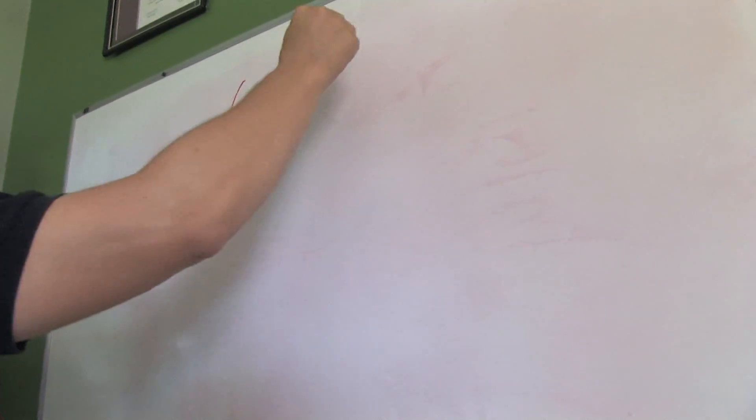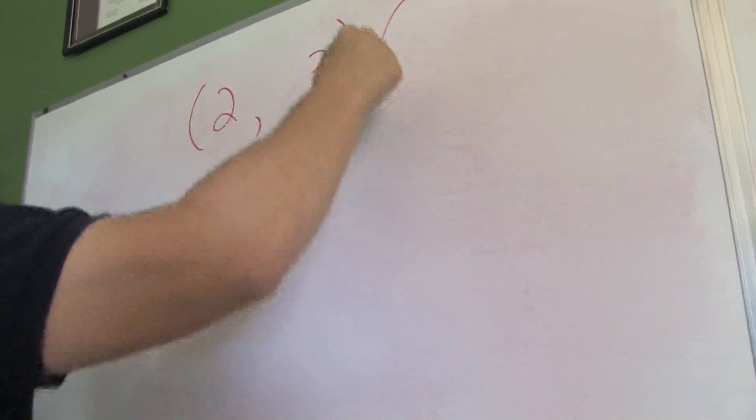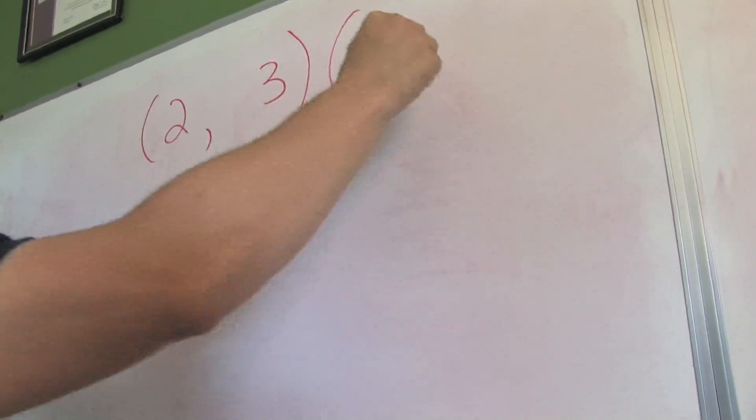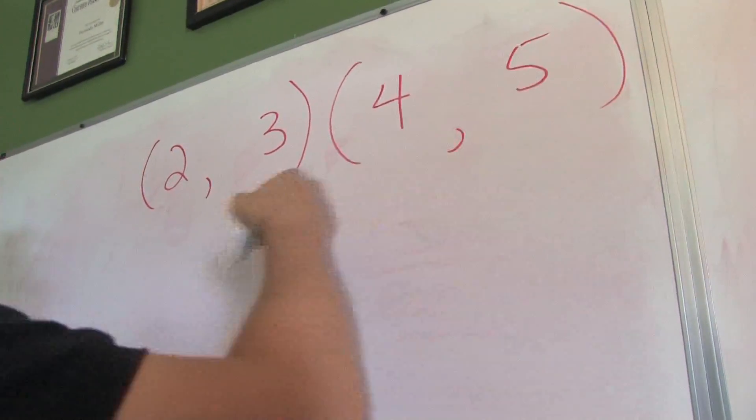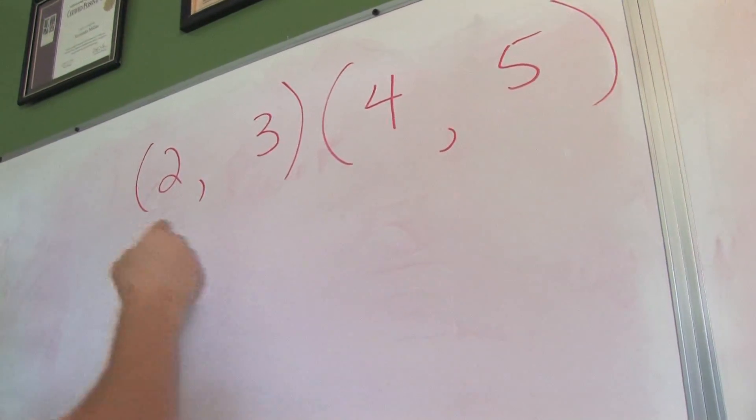Slope, by definition, how to calculate slope? You calculate the slope. Let's say you have two points and this is geared more towards the algebra student who knows a little bit about ordered pairs. So, I'm assuming that he knows that already.